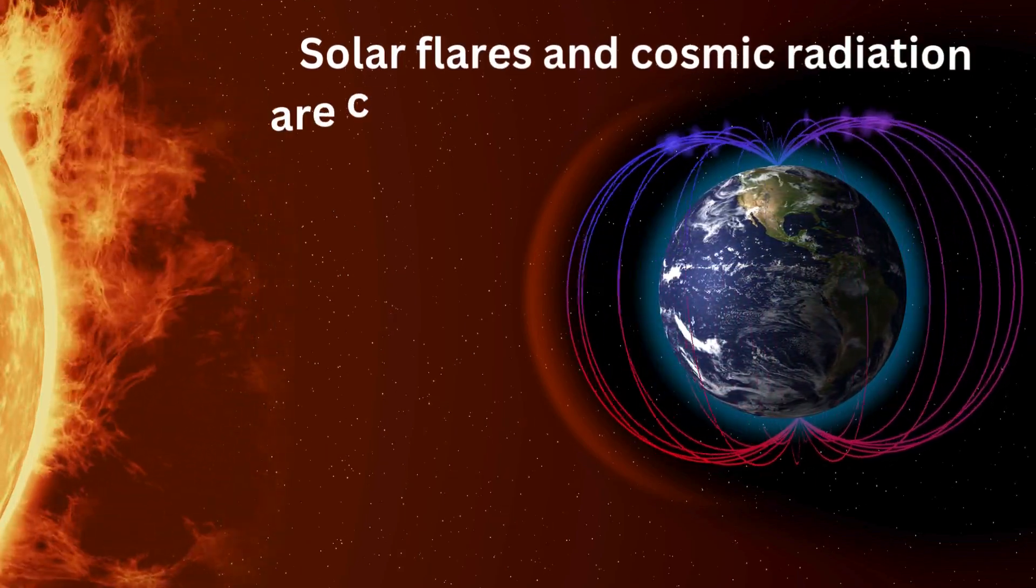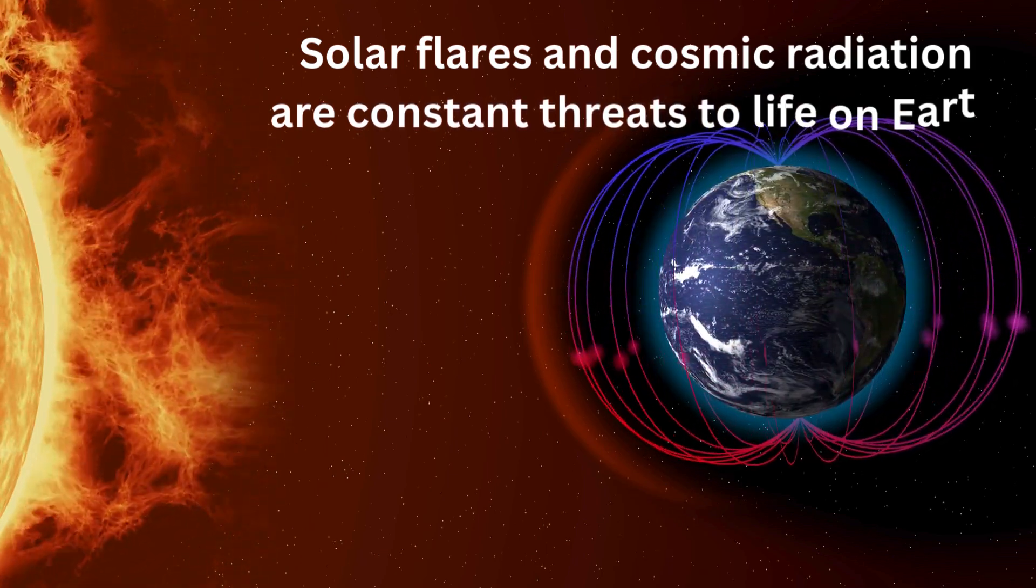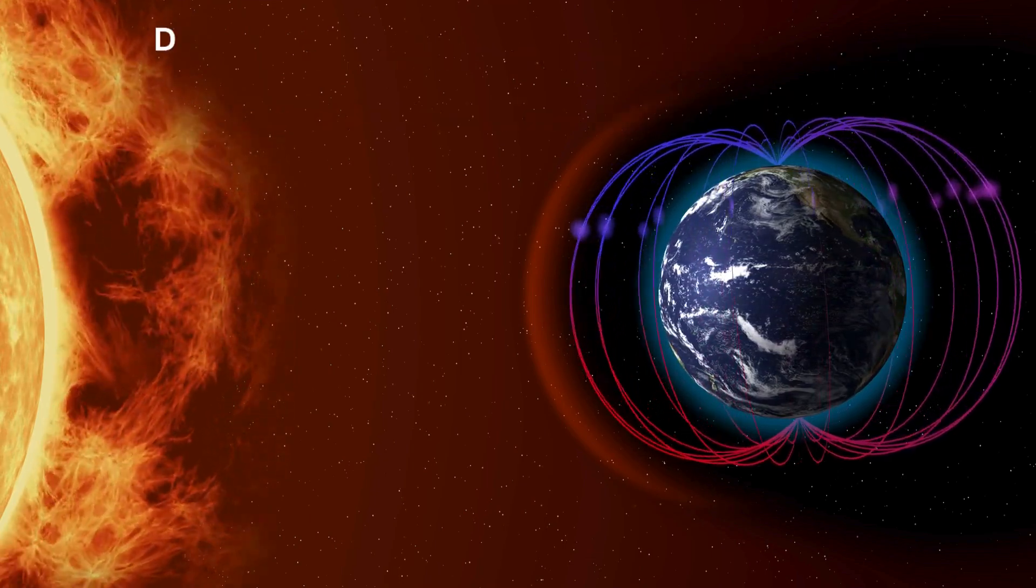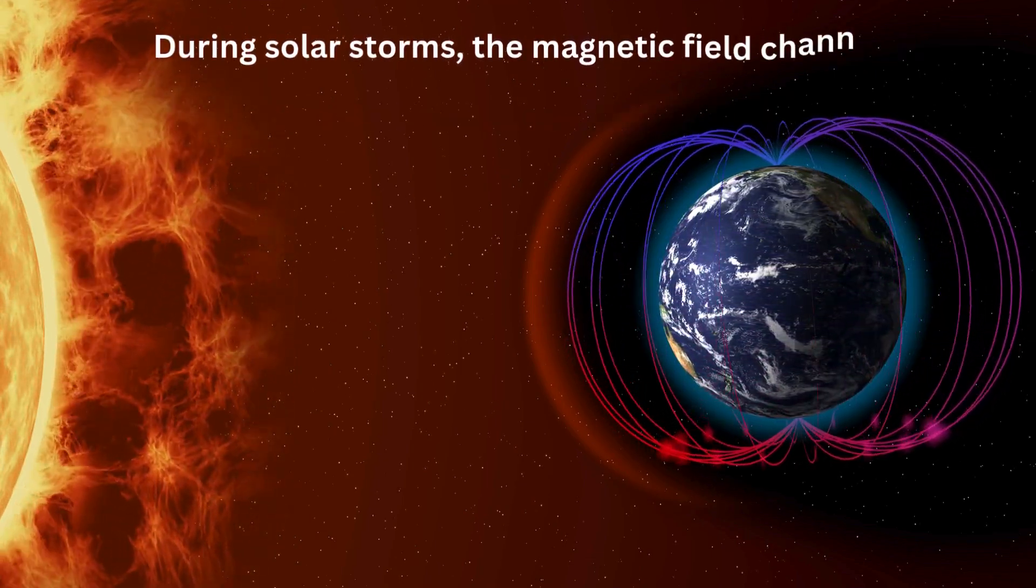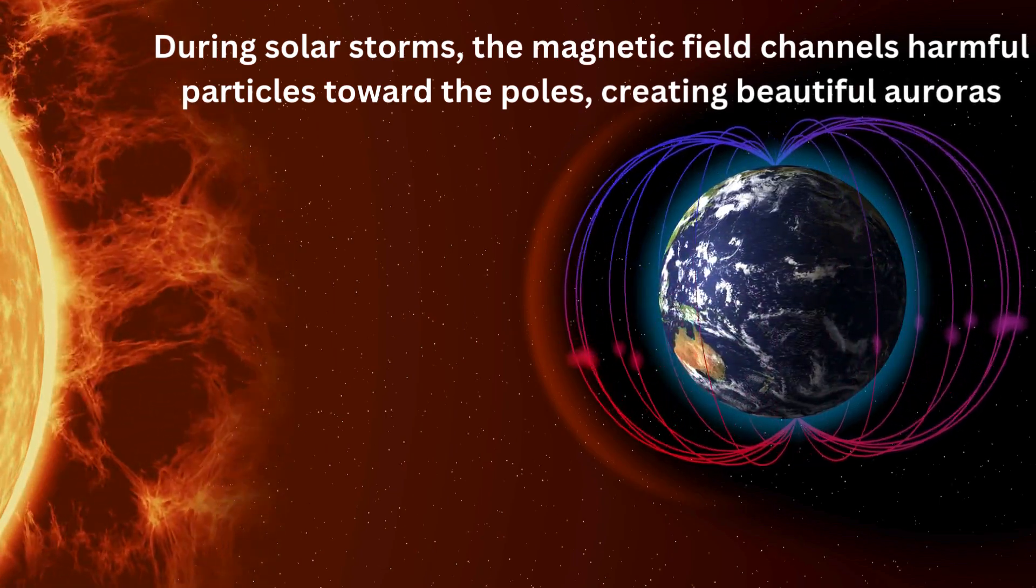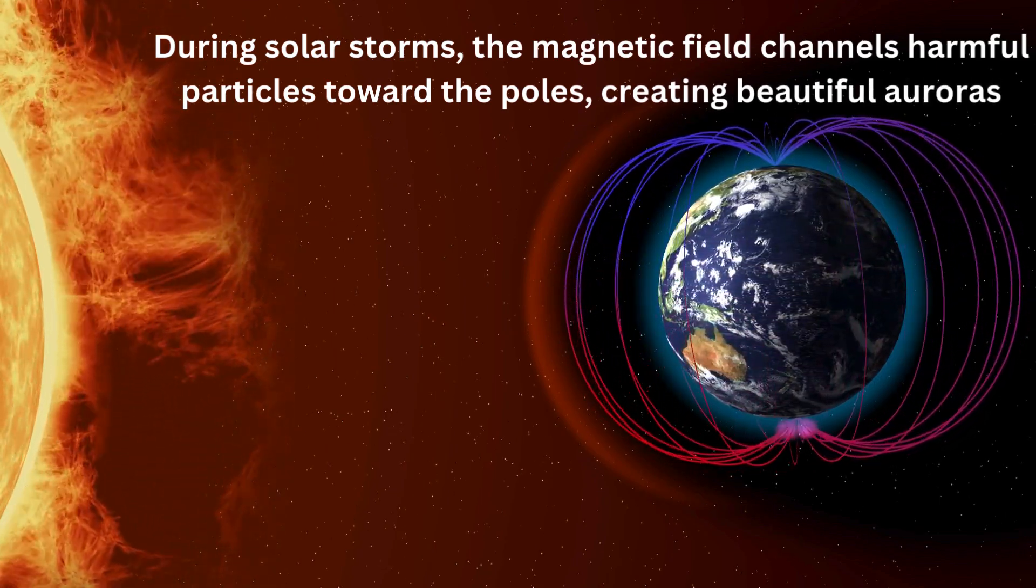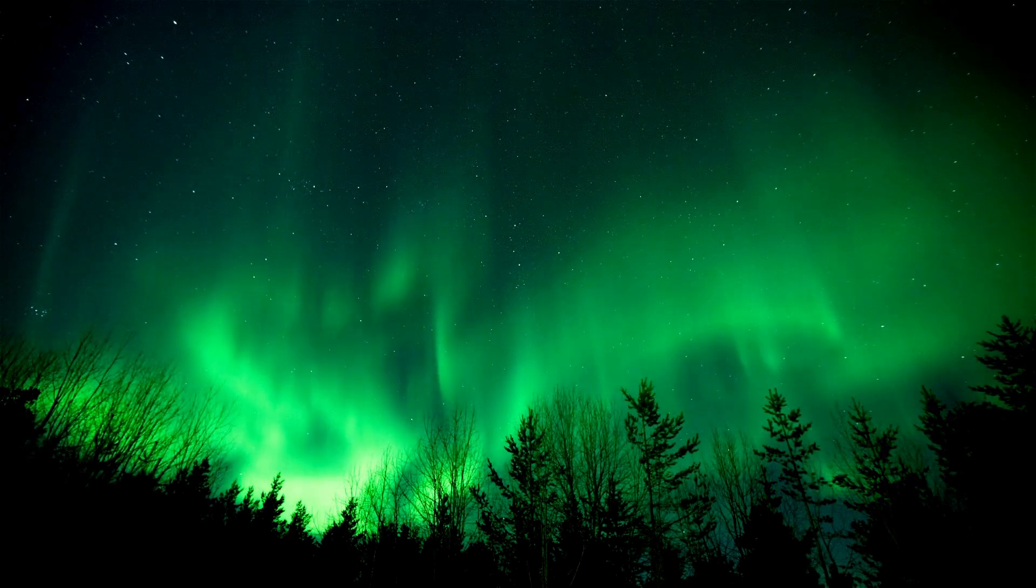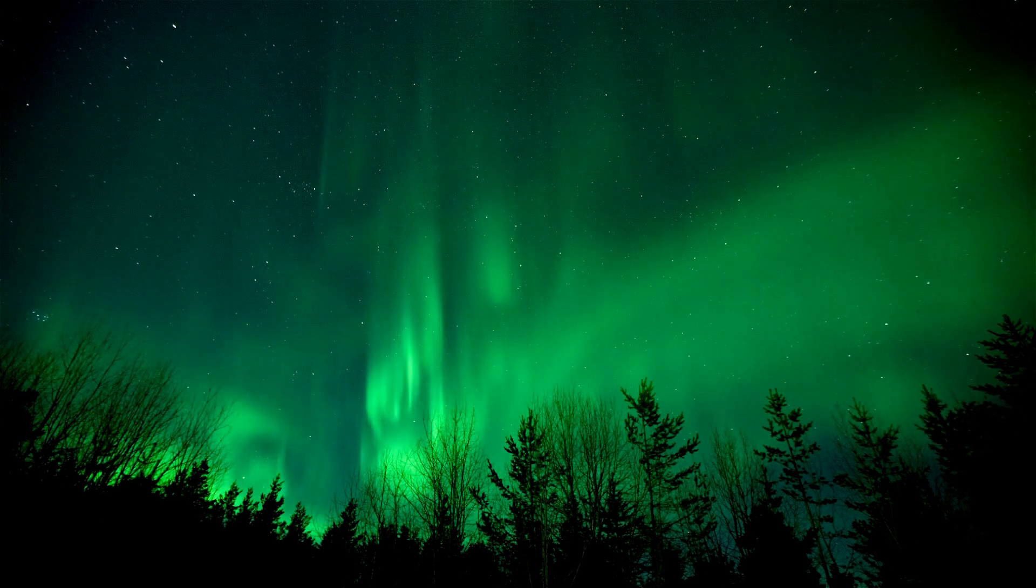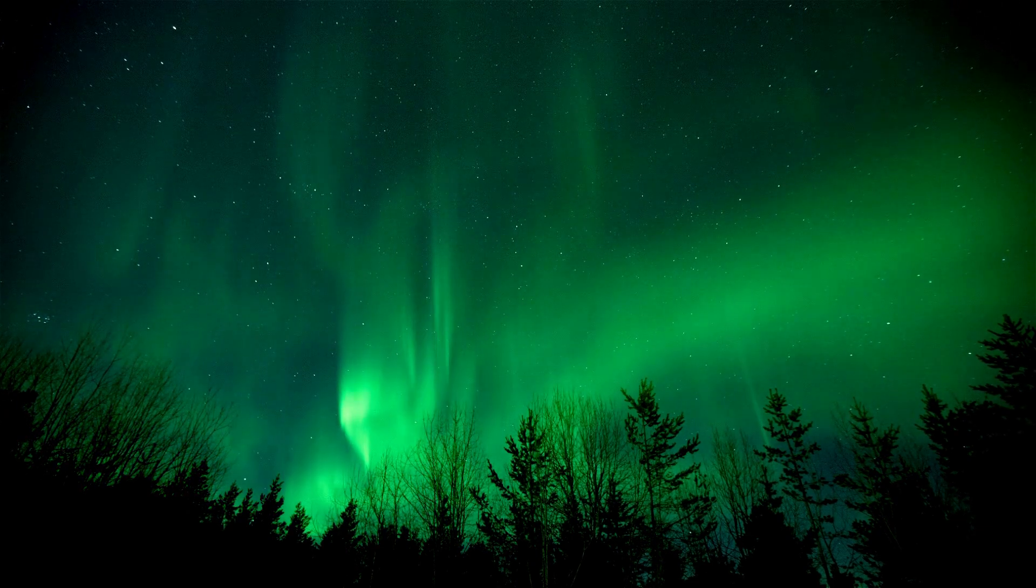Solar flares and cosmic radiation are constant threats to life on Earth. The magnetic field acts as a shield, diverting charged particles away from the planet's surface. During solar storms, the magnetic field channels harmful particles toward the poles, creating beautiful auroras. While these displays are stunning, they also remind us of the protective role the magnetic field plays in our daily lives.